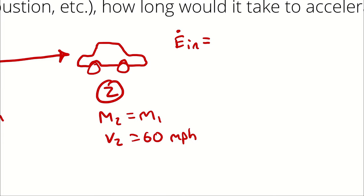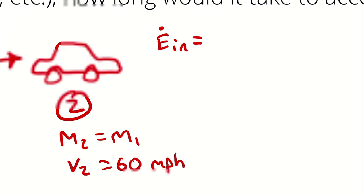For the purposes of this analysis, we're saying that the energy is entering the car as power, even though in reality it's really entering as chemical energy. Depending on how you define your scope, you could consider lots of different starting points — eventually it all goes back to the sun, and before that the Big Bang. But we can't start every analysis at the Big Bang or we wouldn't get anything done. So E dot in equals 185 horsepower.